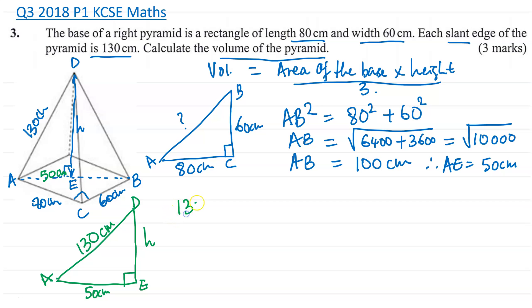Well, what do I have? The hypotenuse is 130. So that squared is equal to H squared plus 50 squared. So therefore, H squared is going to be equal to 130 squared minus 50 squared. So therefore, height is going to be the square root of 130 squared minus 50 squared.